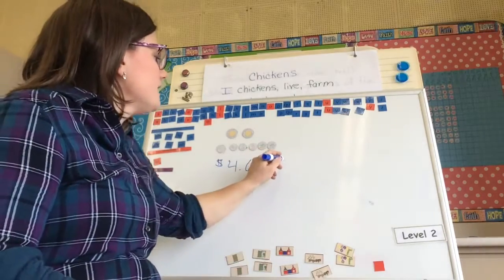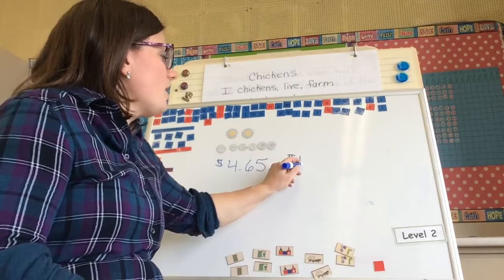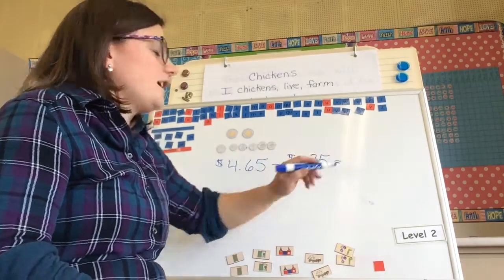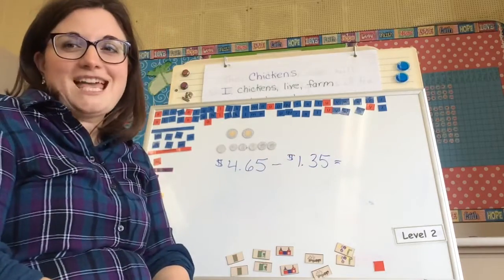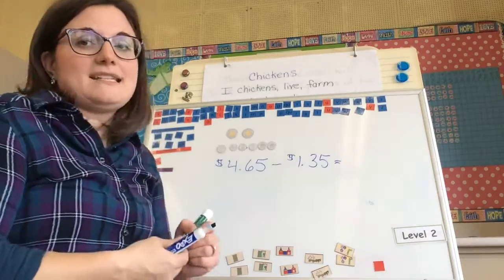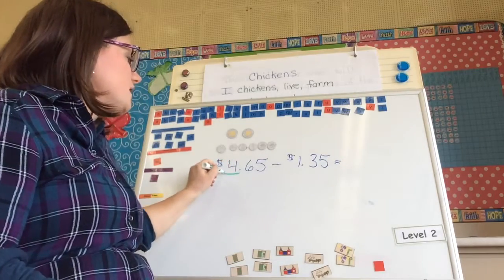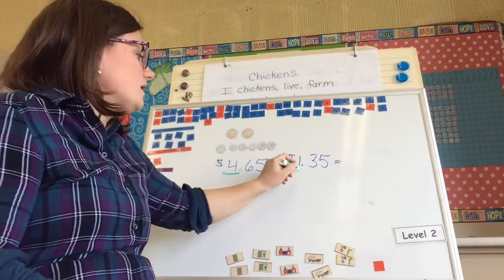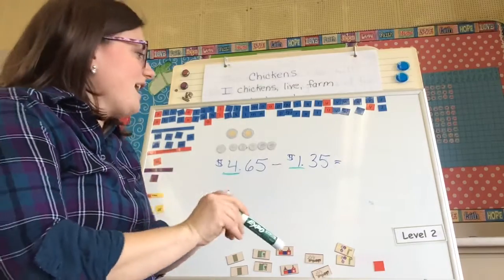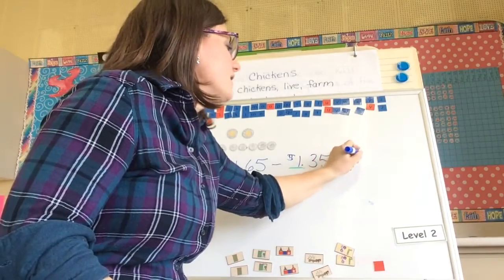And I want to take away $1.35. So let's do this one step at a time. Let's do my dollars first — and if I take away $1, I would have $3.